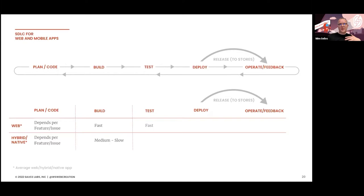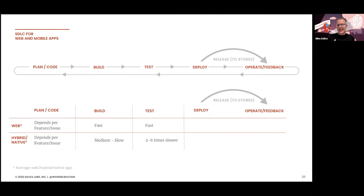In the testing phase — especially the automated part — testing for web can be pretty fast, and if you can scale in the cloud you can run on multiple browsers in parallel and get really fast feedback. But running something on a device can be two to six times slower. So if you want to run the exact same test cases from web on a hybrid or native application, it will be slower.